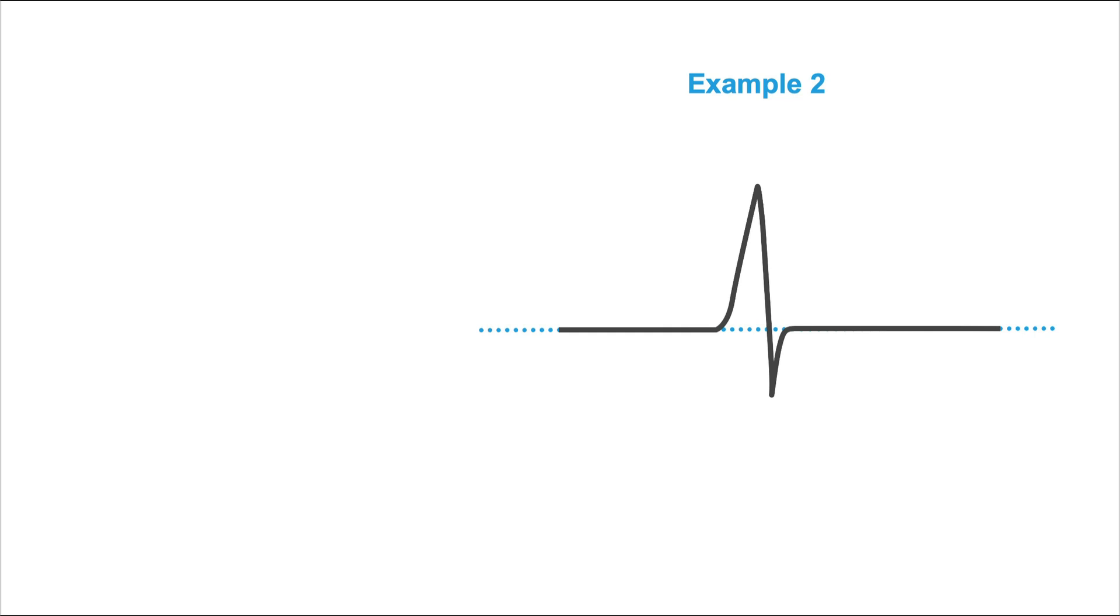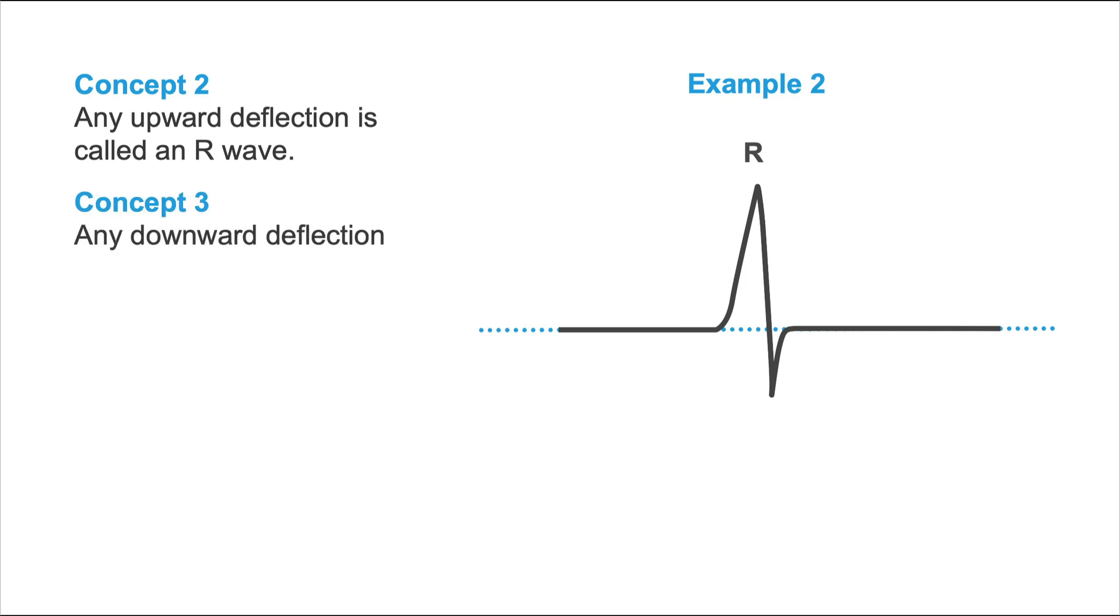Now let's check out example number two. As you can see, we have no initial downward deflection in this case. So according to concept number two, any upward deflection is called an R-wave. So no Q-wave here. And according to concept number three, any downward deflection that comes after an R-wave is called an S-wave. So we have an RS-pattern here.